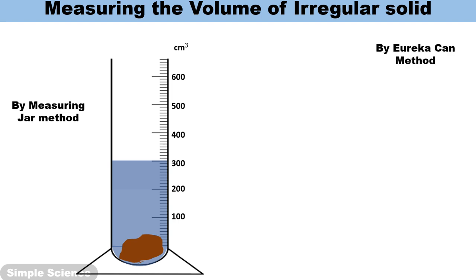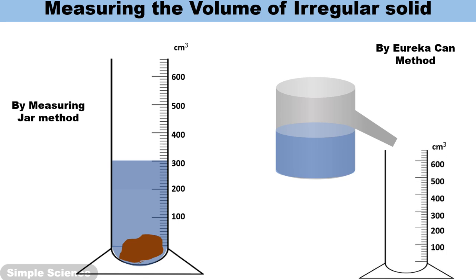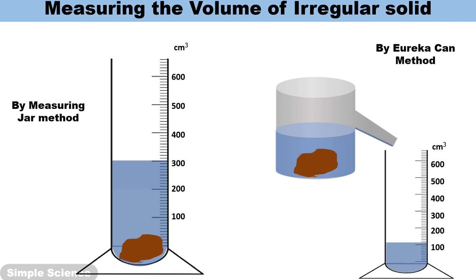The second method is the Eureka can method. Take a Eureka can and fill it with water up to the neck so there is no overflow. Place a measuring jar underneath. When you put the stone in the water, it overflows and gets collected in the measuring jar — 100 cm cube of water is collected. That volume of water collected equals the volume of space occupied by the stone. This is how we measure the volume of an irregular object by water displacement.